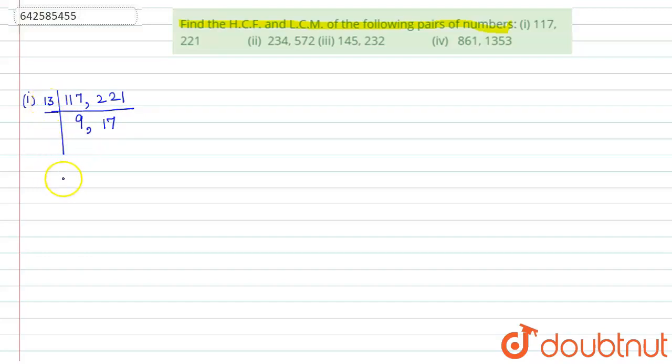So now HCF is 13. And in order to find the LCM, you just remember the L and multiply all the numbers along the L. So LCM will be equal to 13 × 9 × 17, so the LCM is 1989.